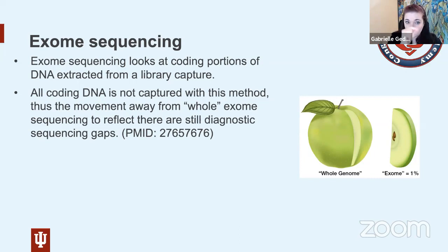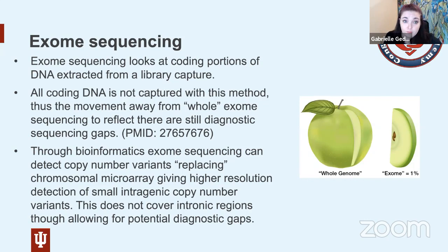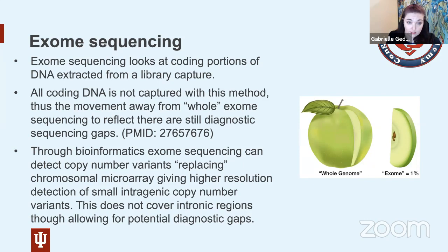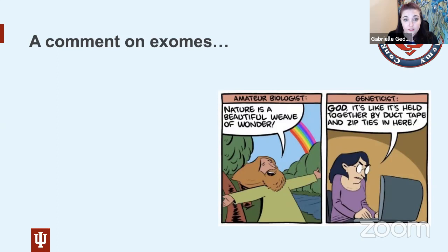Through bioinformatics we can now see copy number variants on exome sequencing, so we can potentially move away from array as our first tier. The limitation is that exome sequencing only covers exons, not introns, so there can be diagnostic holes there. A caution: the first time you see an exome you are shocked by what it looks like, because there are so many variants. I show my students my own exome on ClinVar to show how many diseases it looks like I have.